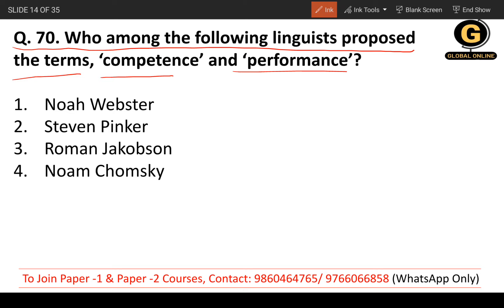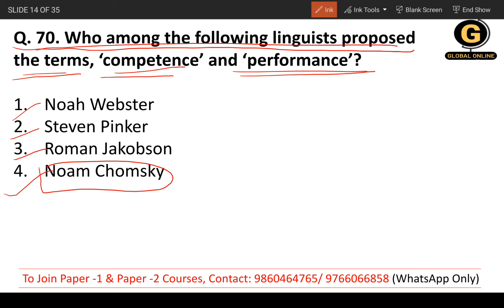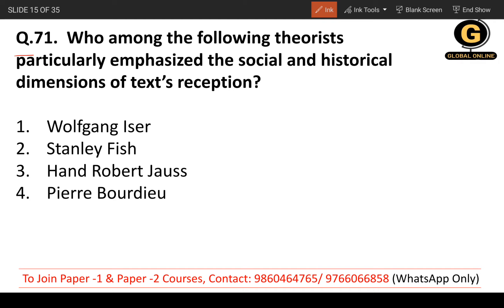Question 70: Who among the following linguists proposed the terms 'competence' and 'performance'? The options are Noah Webster, Steven Pinker, Roman Jakobson, and Noam Chomsky. The correct answer is Noam Chomsky, who proposed these terms.